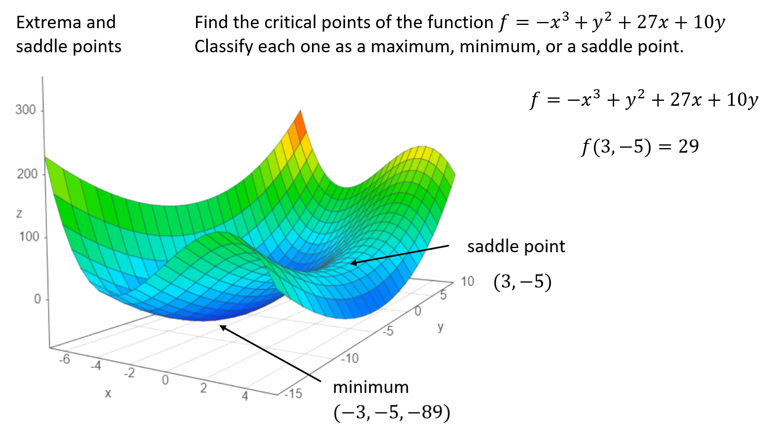Likewise, for the saddle point, we can plug the x and y coordinate in. The result turns out to be 29, arithmetic not shown. Now we know the three dimensional location of our saddle point as well.